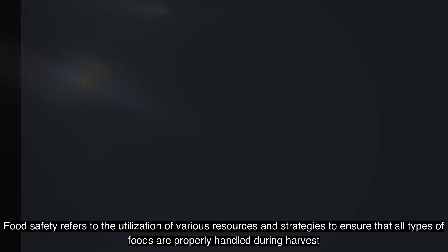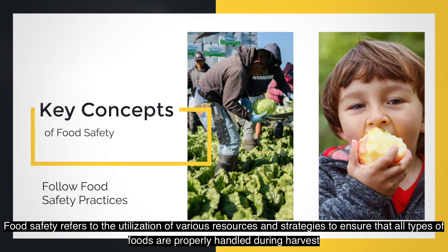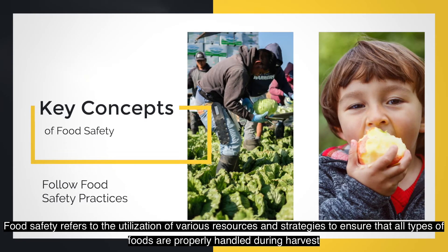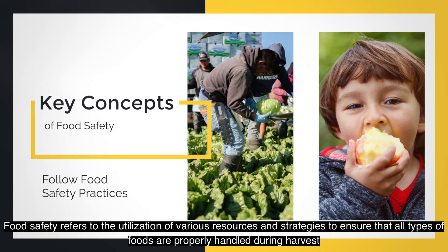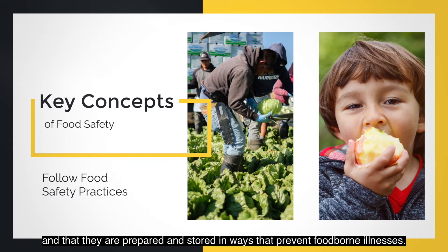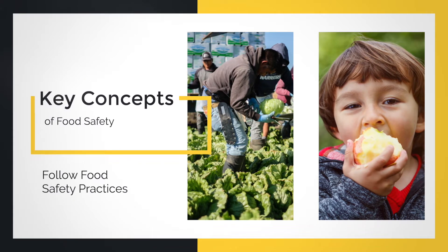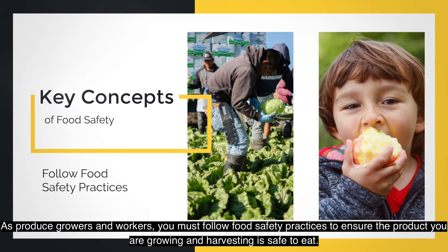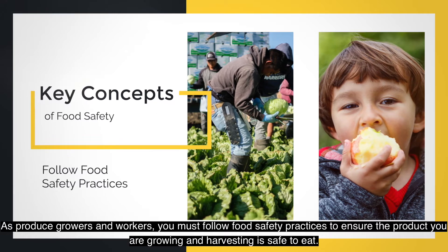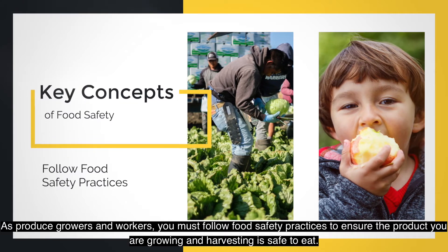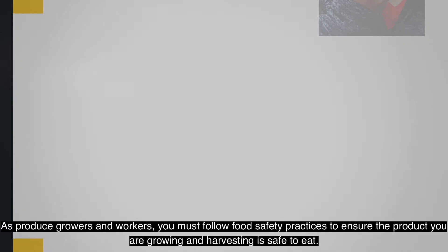Food safety refers to the utilization of various resources and strategies to ensure that all types of foods are properly handled during harvest and that they are prepared and stored in ways that prevent foodborne illnesses. As produce growers and workers, you must follow food safety practices to ensure the product you are growing and harvesting is safe to eat.